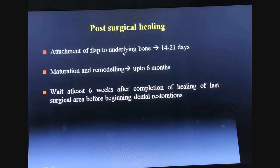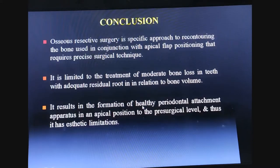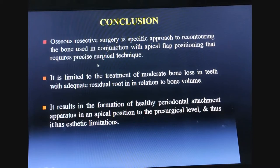Attachment of the flap to underlying bone takes usually 14 to 21 days, and maturation and remodeling takes up to six months. We need to wait six weeks after completion of healing of the last surgical area before beginning dental restorations. Osseous resective surgery is a specific approach to recontouring the bone used in conjunction with apical flap positioning, requiring precise surgical technique, and is limited to treatment of moderate bone loss in teeth with adequate residual root in relation to bone volume, resulting in formation of a healthy periodontal attachment apparatus.